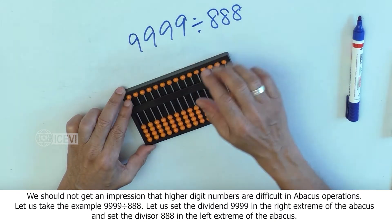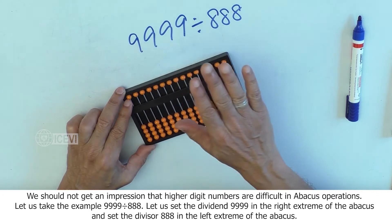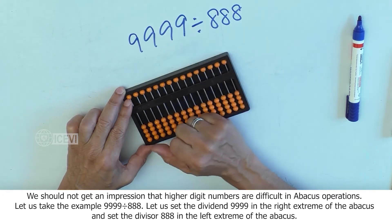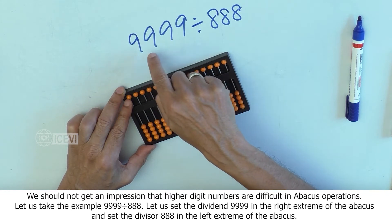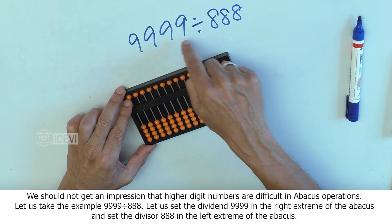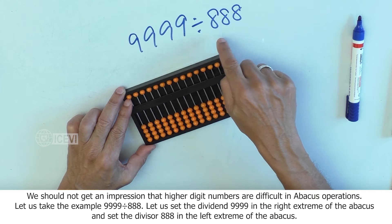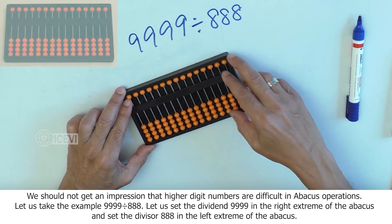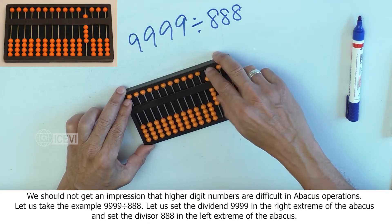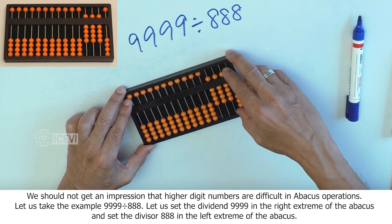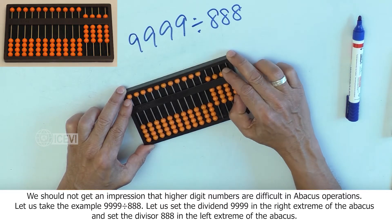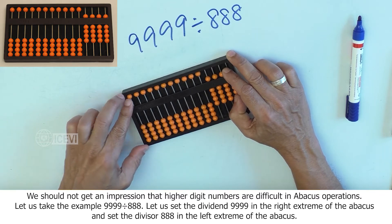We should not get an impression that higher digit numbers are difficult in abacus operations. Let us take the example 9999 divided by 888. Let us set the dividend 9999 in the right extreme of the abacus and set the divisor 888 in the left extreme of the abacus.